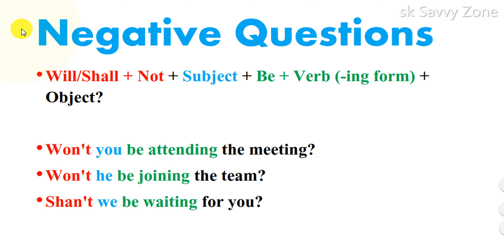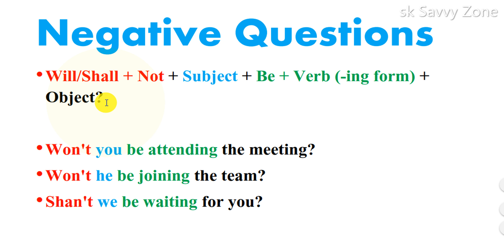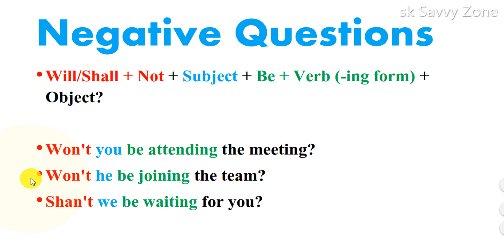The negative interrogative sentences in the future continuous tense follow the formula: Will/Shall + not + Subject + be + the -ing form of the verb + question mark. For example: 'Won't you be attending the meeting?' 'Won't he be joining the team?' and 'Shan't we be awaiting for you?' This was all about the future progressive tense.